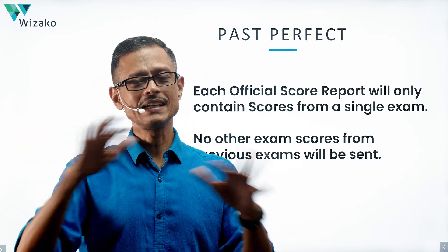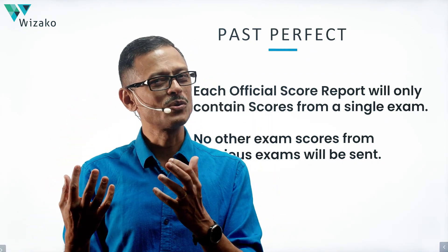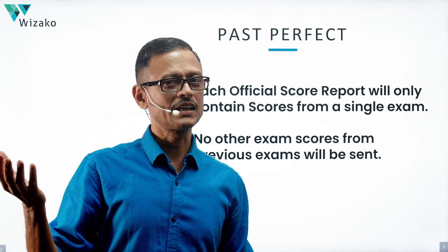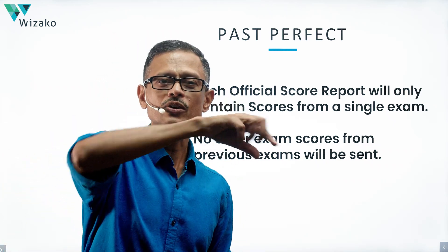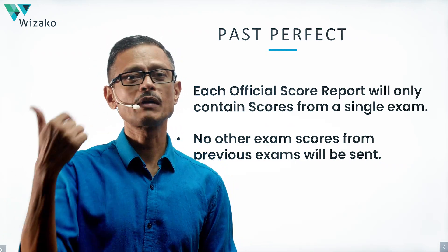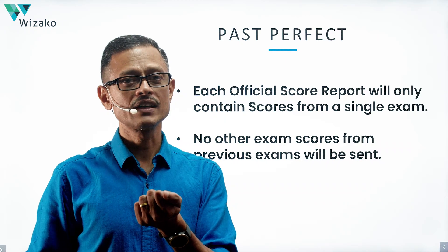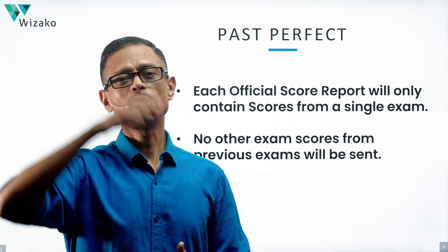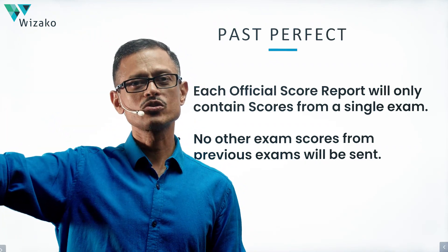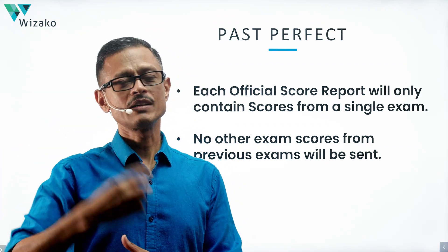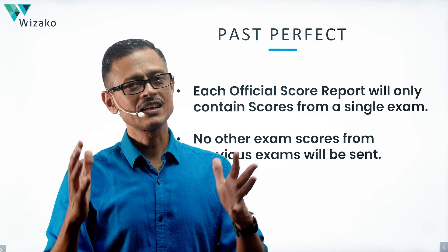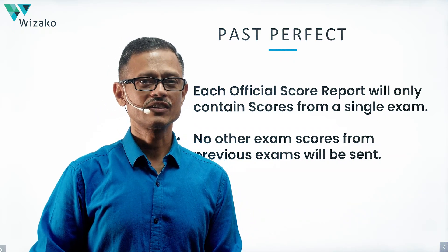You have a lot more control over which scores go to which school. For example, if one school values quant performance, you might send the score where you got a perfect 90 in Quant — even if the overall score is a 745 rather than a 765. For another school where the overall score matters more, you'd send the 765. These are welcome changes that make a test-taker's life a lot easier. Best wishes.